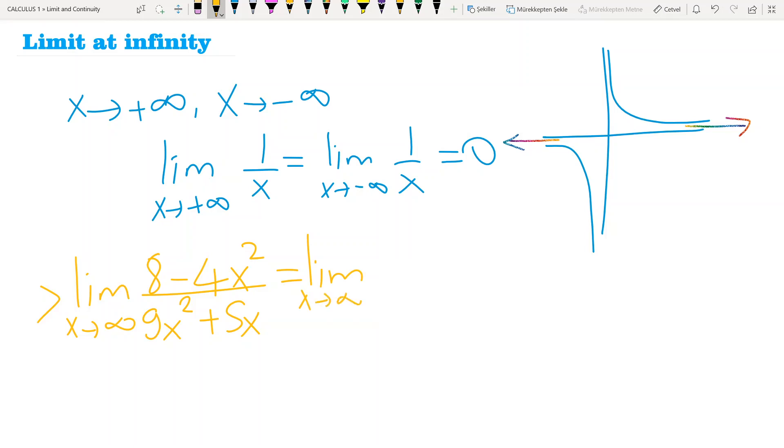I will not use L'Hôpital's rule for this kind of question. If you take parenthesis of X squared here, you have 8 over X squared minus 4. I also take the parenthesis of X squared in denominator, so I have 9 plus 5 over X.